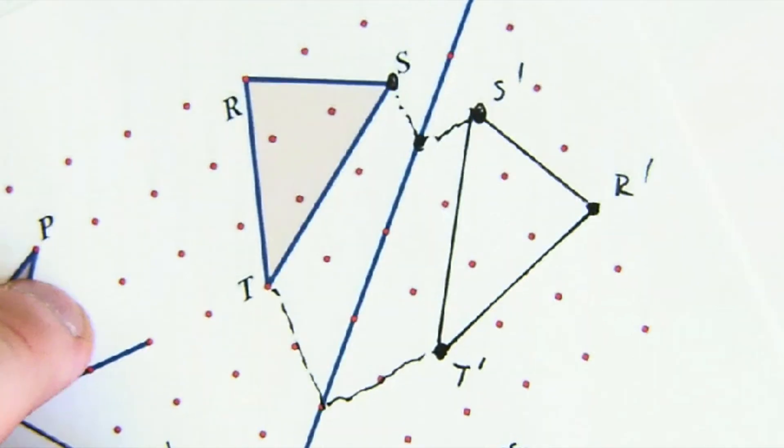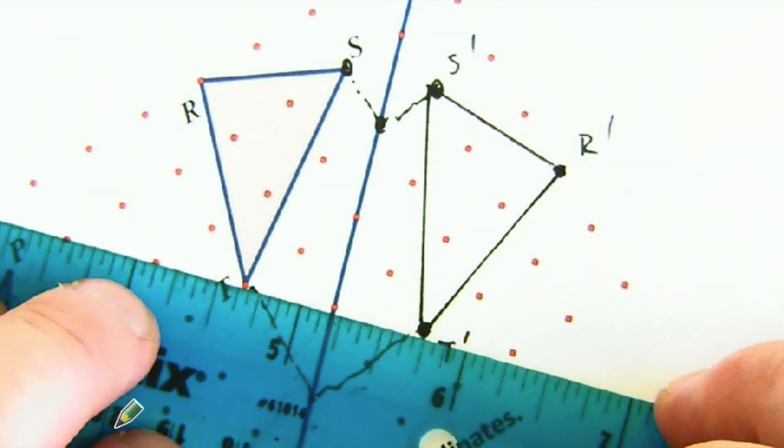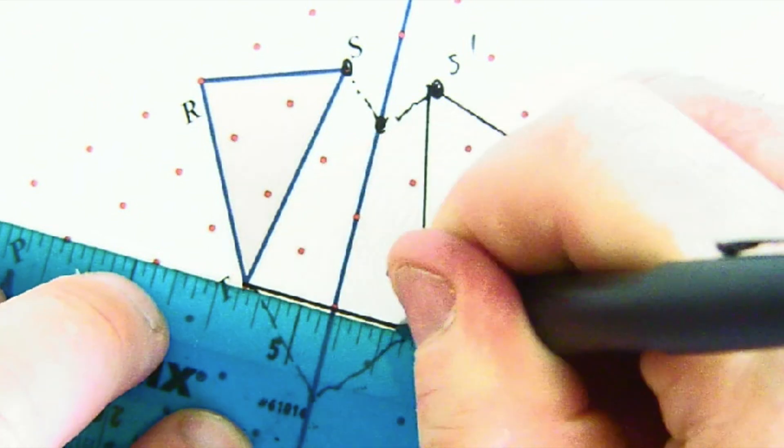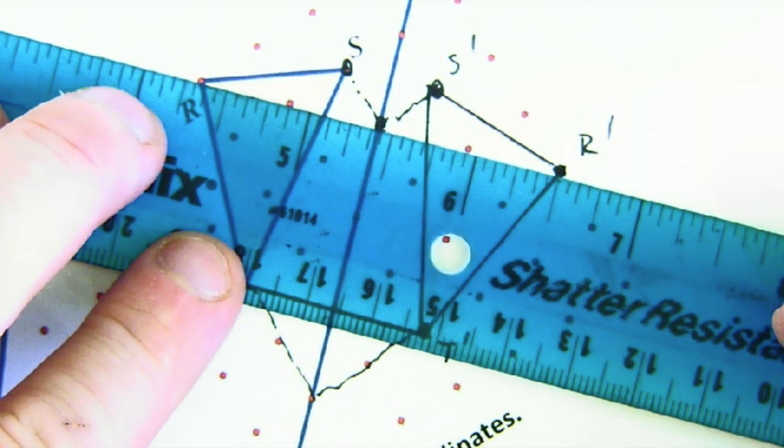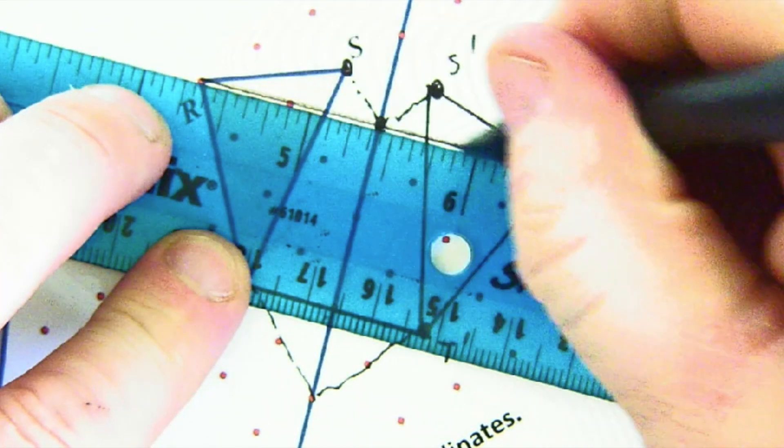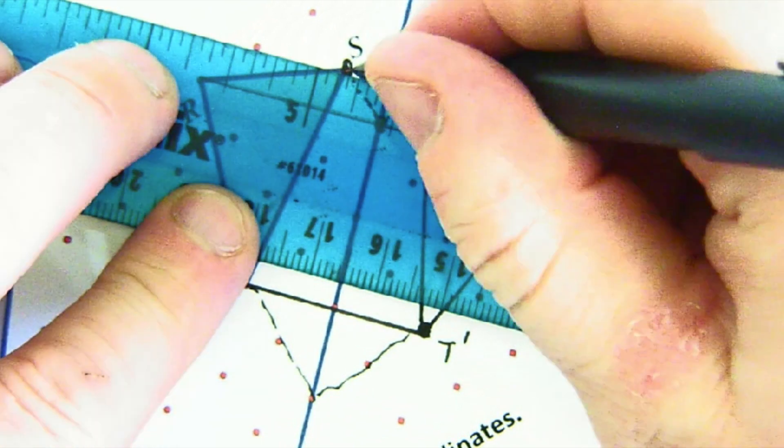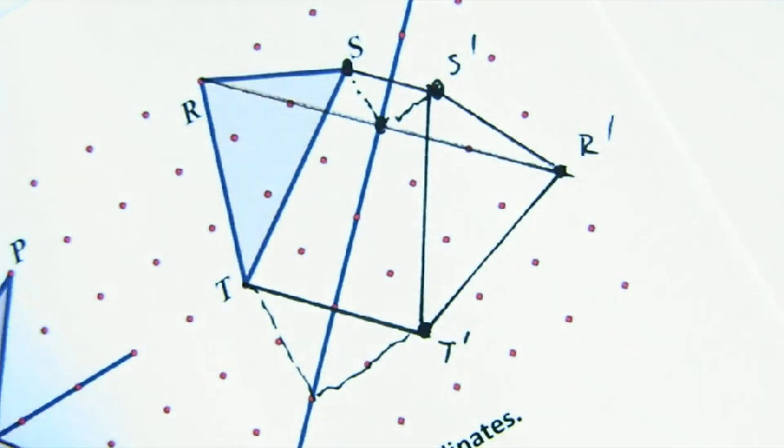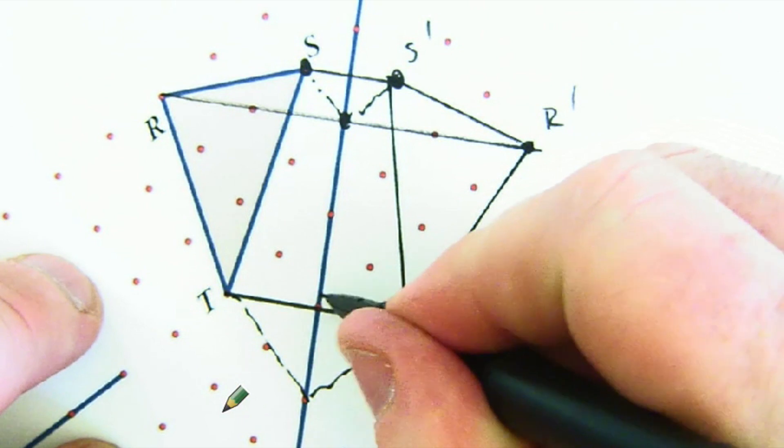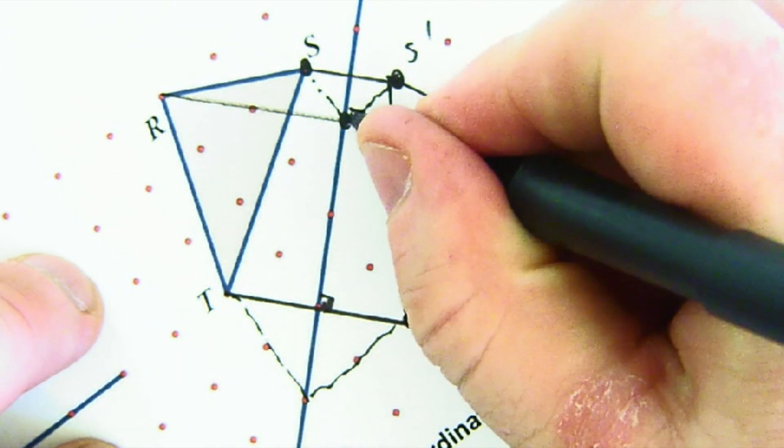You can see that we've done it correctly because all points—T to T prime, R to R prime, S to S prime—all those motions are parallel. They're all perpendicular to the line of reflection. Beautiful work. That is a reflection.